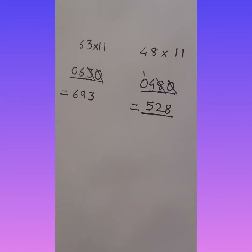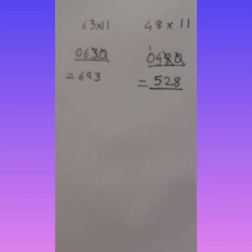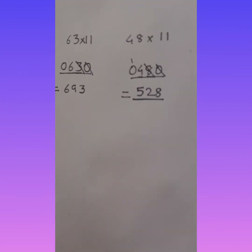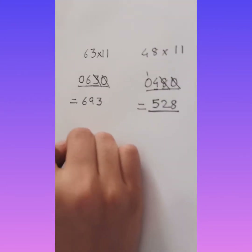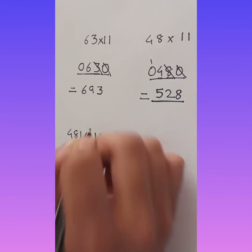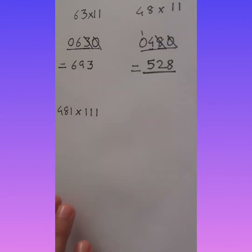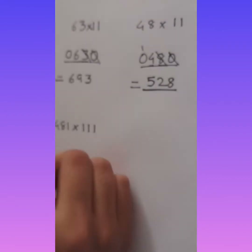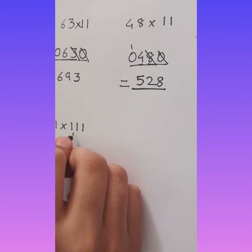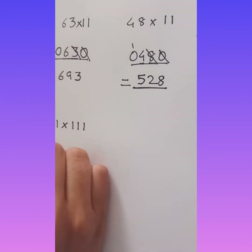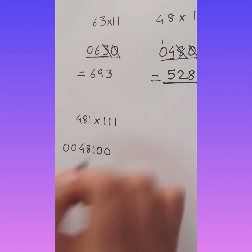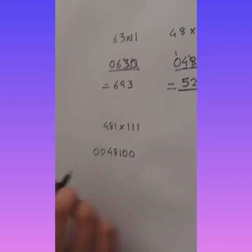Now let's move to greater digits. We will take an example of 481 multiplied by 111. First write 481 as it is. Since 111 is 3 digits, we write 2 zeros before and 2 zeros after, as I explained before.